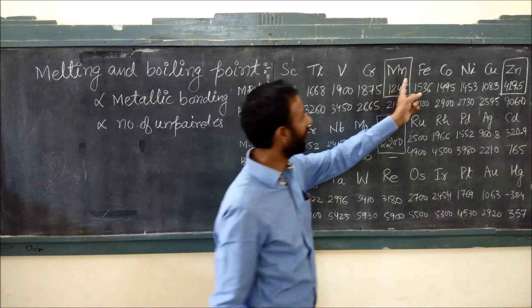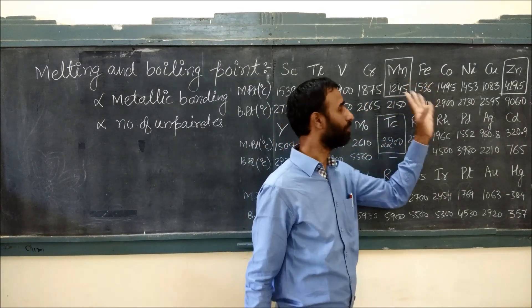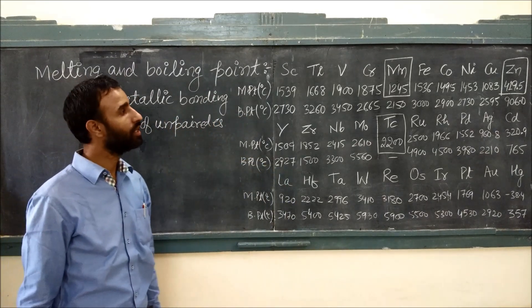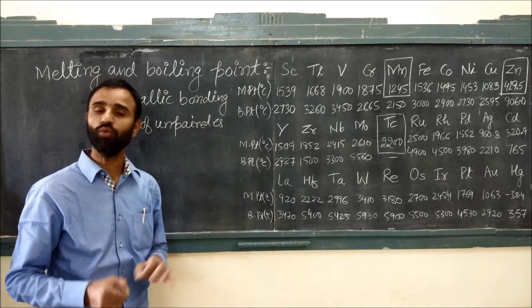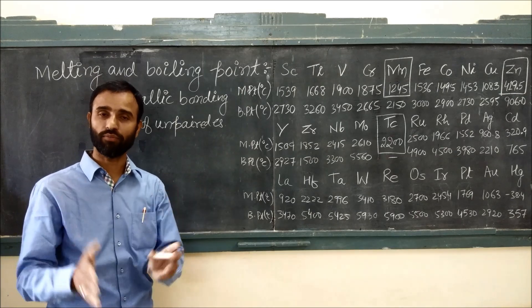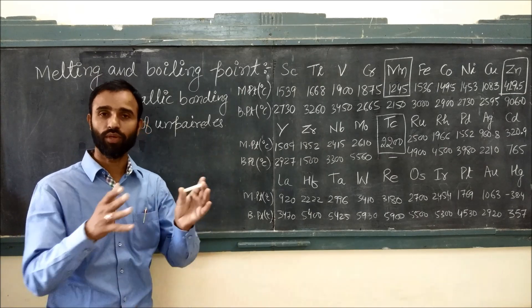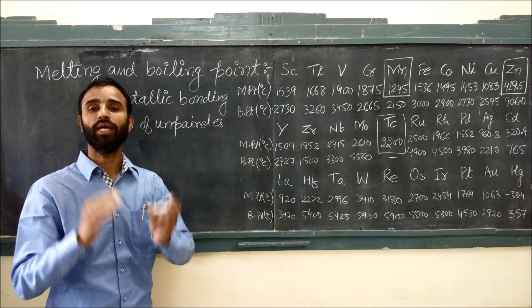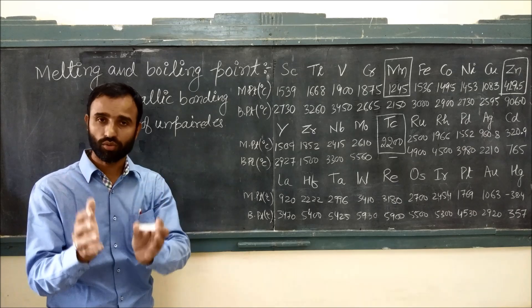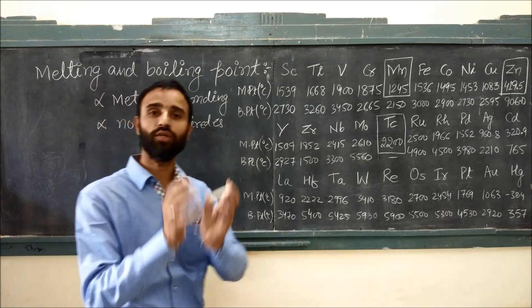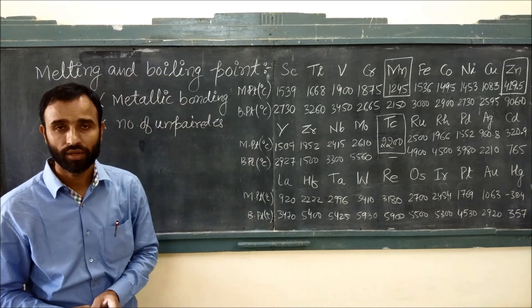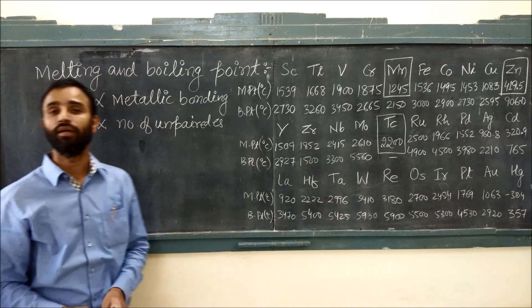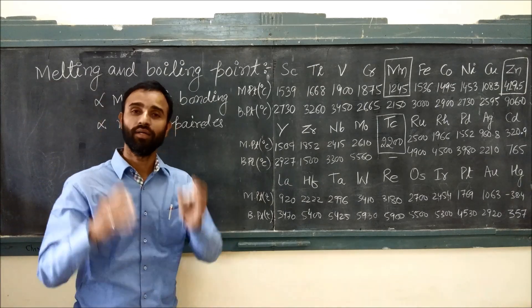That's why its melting point as well as boiling point are least. Why is there a dip in the melting point curve for manganese? Because in the case of manganese, it is 3D5-4S2 — exactly half-filled D and fully filled S — giving it a stable electronic configuration. So electrons are less willing to participate in metallic bonding, making its metallic bonding weak, and that's why melting and boiling points are lower.